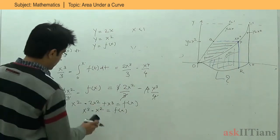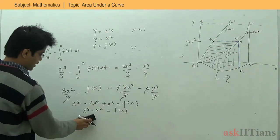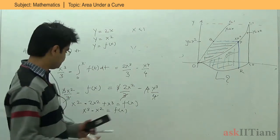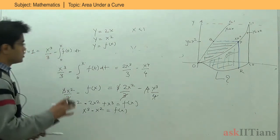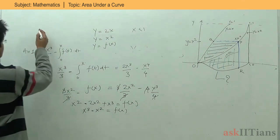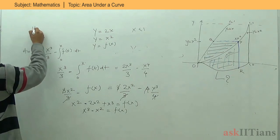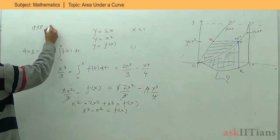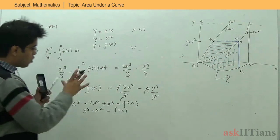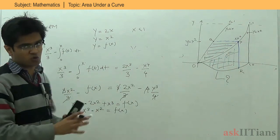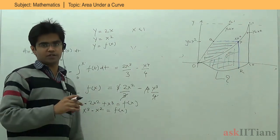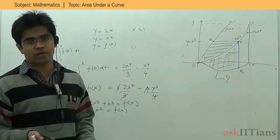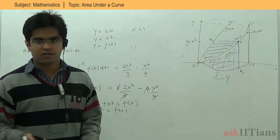So in this way, we find that F(X) equals X cubed minus X squared, which was the required function desired in the question. This was the question asked in IIT JEE 1998 for 8 marks, along with the full procedure to solve it. I hope you enjoyed this session. If you have any queries, you can comment. Thank you.